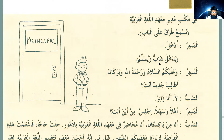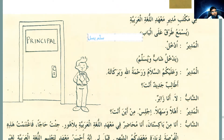A young man enters and he gives salam. Yusallimu — this is form 2. How do you know it's form 2? You see the second letter is doubled — the 'ayn al-kalima is doubled. Sallama-yusallimu — fa'ala-yufa'ilu. Tasliman is the masdar; taf'il is the masdar of form 2, and you can remember: sallama-yusallimu.